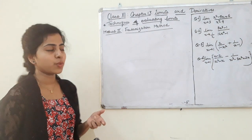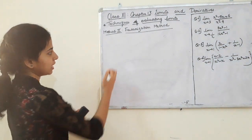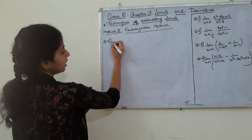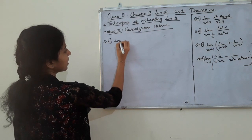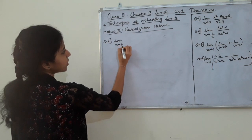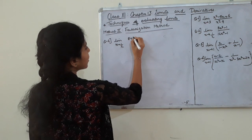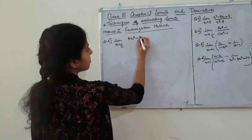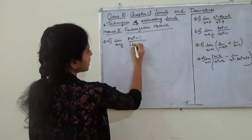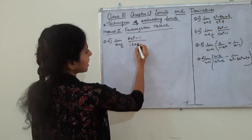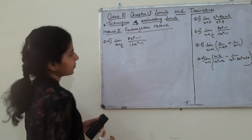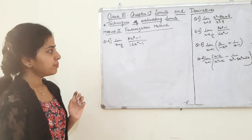This is our next question — Question 2. The limit as x tends to 1/2 of (8x³ - 1) divided by (16x⁴ - 1). This is our question.